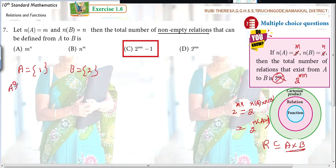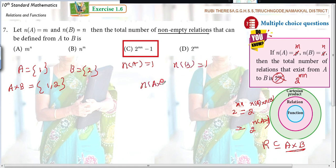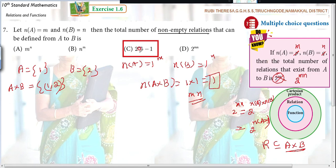First, find out A cross B. What is A cross B? It is {(1, 2)}. Here N of A is equal to 1 and N of B is also equal to 1. So N of A cross B equals 1 times 1, which is 1. In general, if it is M and N, then this is MN. To list the relations, since a relation is a subset of the Cartesian product, you write down the subsets.